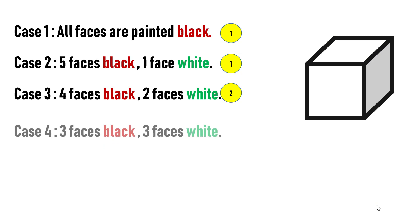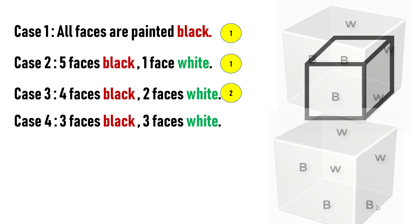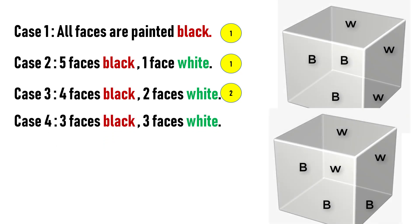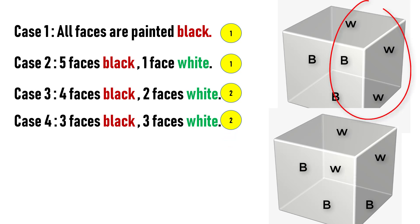In case four, let's assume three faces are painted black and three faces are painted white. In this case also, there are two possibilities. One way where three white sides share the same corner, and the other way where opposite sides are white and one center side is white.